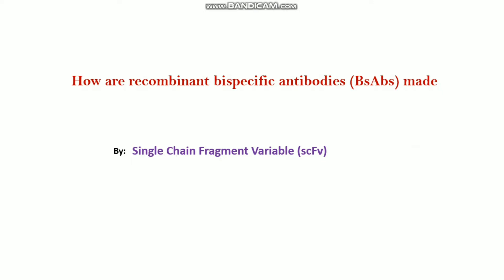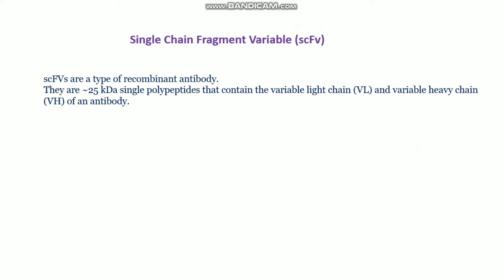We need to know first what is ScFv, or single chain fragment variable. Single chain fragment variable are a type of recombinant antibody, and they contain around a 25 kDa long sequence. That sequence contains the light chain variable region and the heavy chain variable region of an antibody.